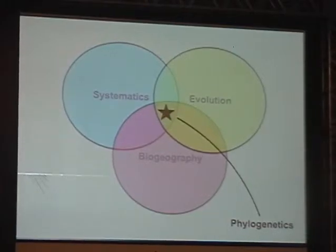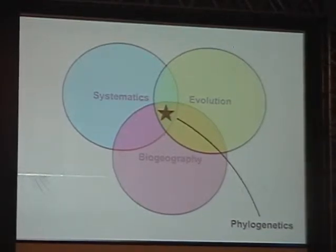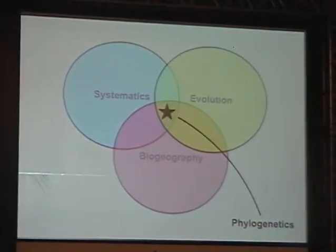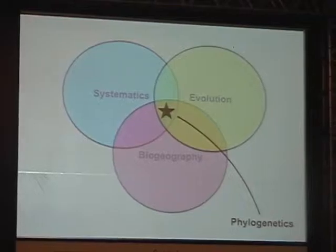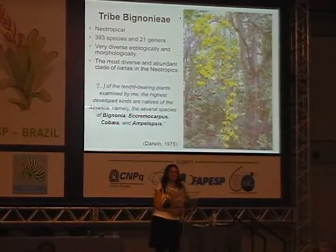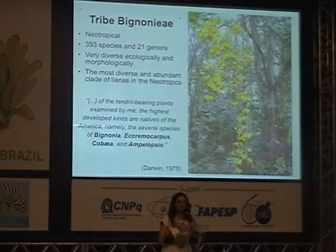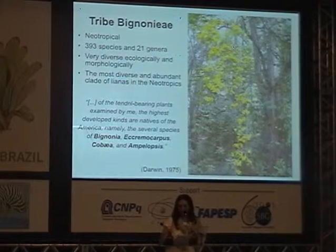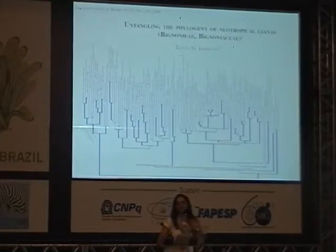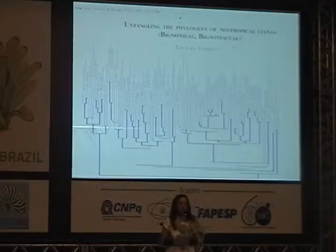When these phylogenies came out, they were just an amazing tool. Now we could test all these hypotheses about systematics, evolution, and biogeography. They provided a framework to finally test hypotheses we had been wanting to test for a long time. So this is when I was joining graduate school, eager to start working on a phylogeny of Bignoniaceae, which provided a wonderful framework to understand a series of diversity patterns in this group.